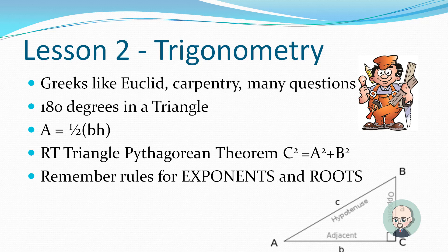There's some things that are important to know. There's 180 degrees in a triangle. The area of a triangle is one-half the base times the height. A right triangle, you need to know the Pythagorean theorem. C squared equals A squared plus B squared. And it's very important to remember your rules for exponents and roots when you're solving the Pythagorean theorem related problems.